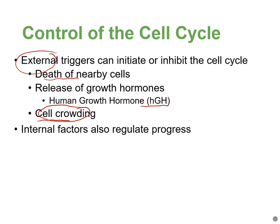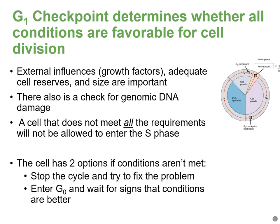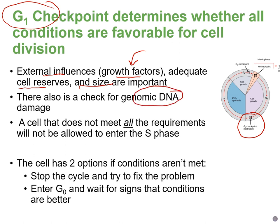There are also internal factors that regulate cell progress throughout the cell cycle, just like these checkpoints. At the first checkpoint near the end of G1, the cell checks for external influences like growth factors, sufficient energy reserves, whether the cell is big enough to divide, and genomic DNA damage — are the chromosomes normal? If these requirements are not met, the cell will not be able to move past G1 into the DNA synthesis phase.